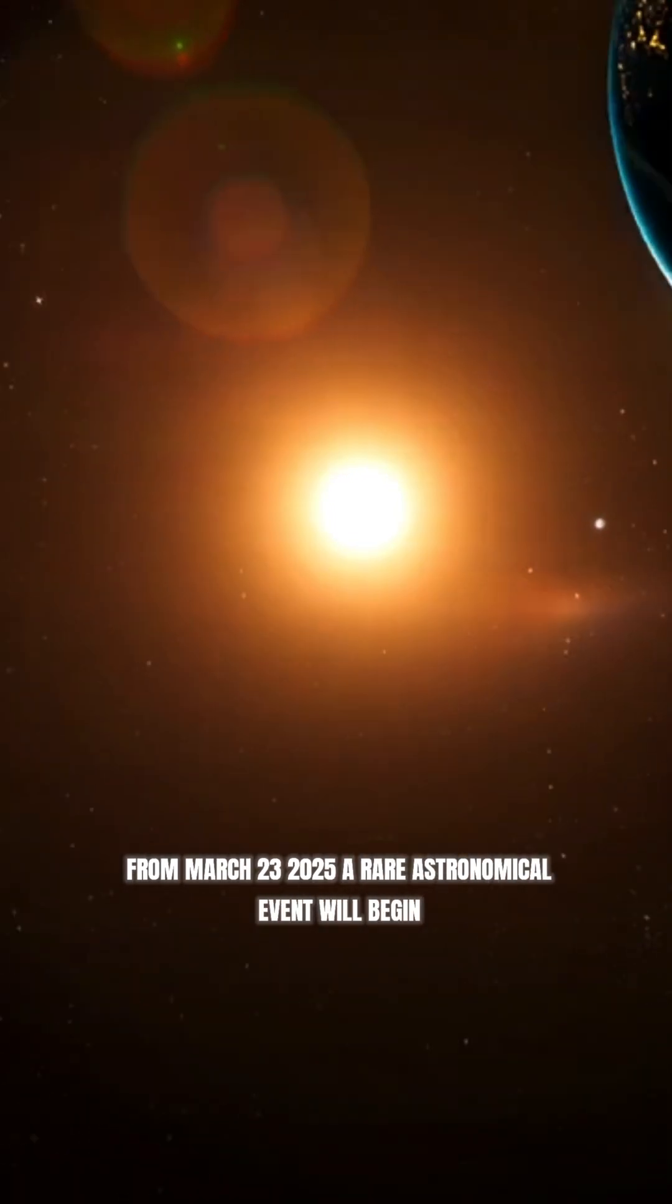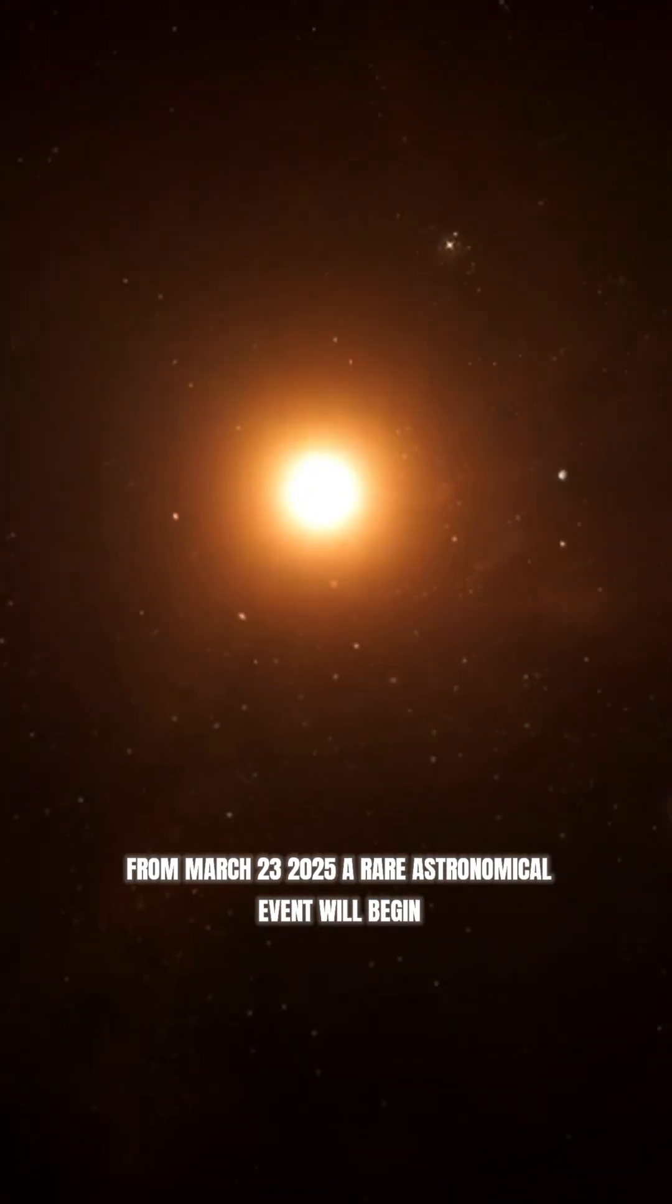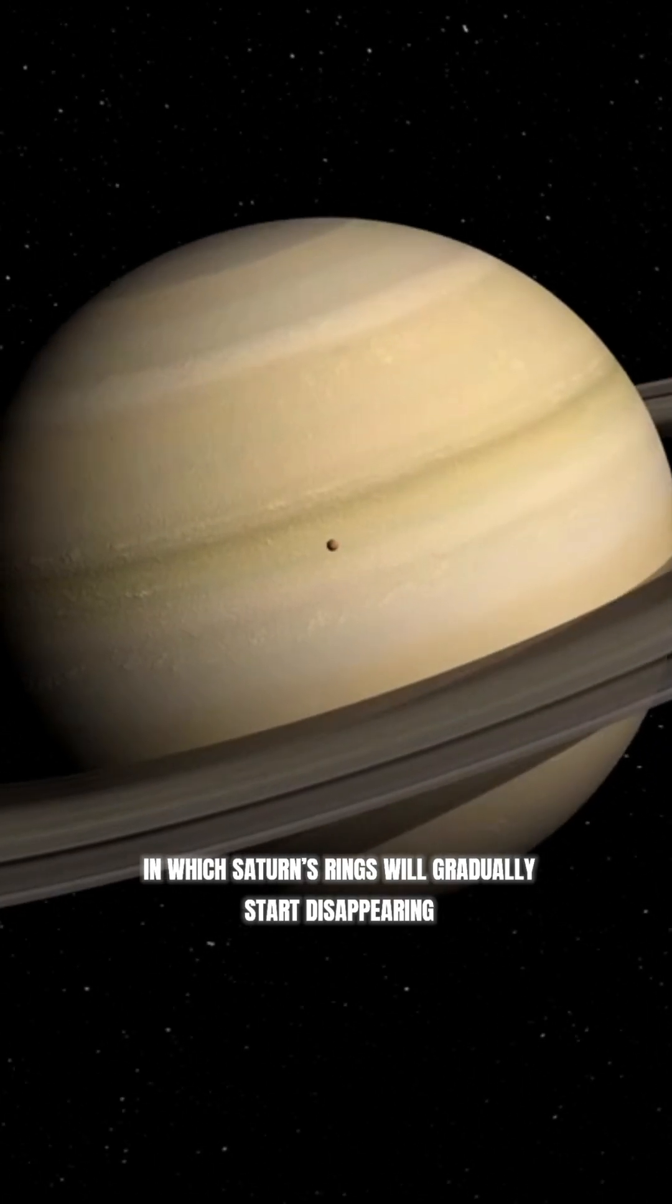From March 23, 2025, a rare astronomical event will begin in which Saturn's rings will gradually start disappearing. And by November 25, 2025, they will completely vanish.